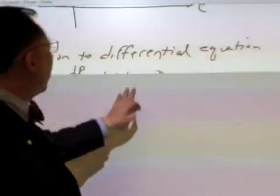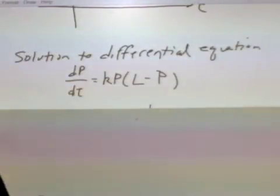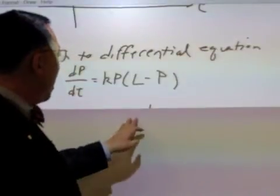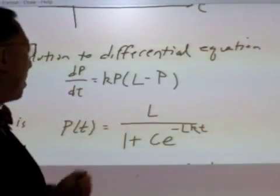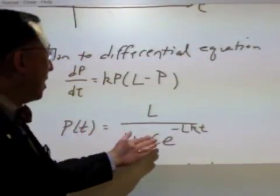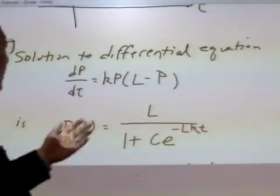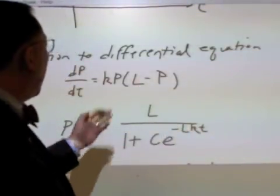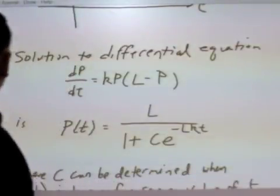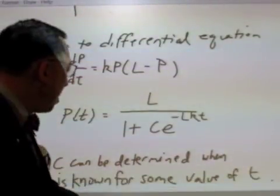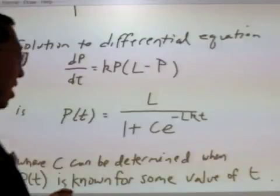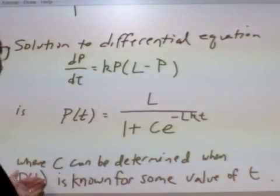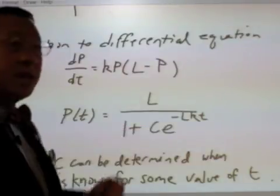And so the solution that we have to the logistic differential equation, dp/dt is equal to kp times the quantity L minus p, is as follows. So we have p of t is equal to L, that's our limiting population, all over 1 plus c e to the negative Lkt. And so L and k are both known, but c has to be determined by some information that's given in the problem. If we know the population at a particular time, we can plug into this equation and solve for c over here.